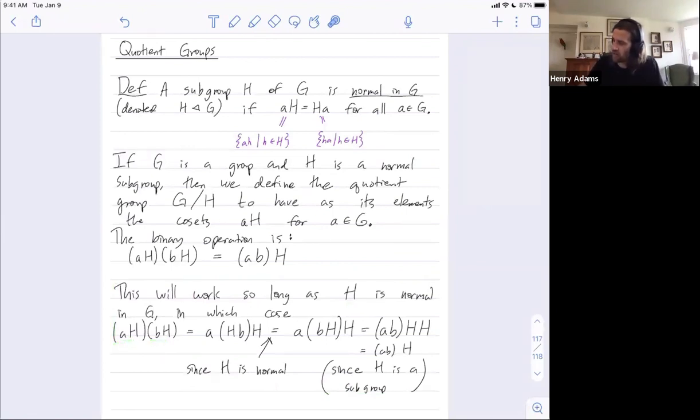If the elements of this quotient group are supposed to be cosets, but in the case of a non-normal subgroup H, if we can multiply two cosets and get something that's not a coset, then of course we don't have a binary operation. And that explains a little bit why you could only define this quotient group in the case that H is a normal subgroup.